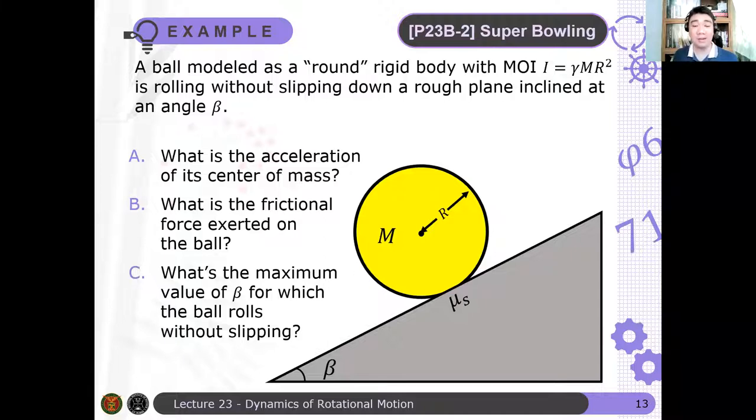First, what is the acceleration of the center of mass? Second, what is the frictional force exerted on the ball? And third, what is the maximum value of beta for which the ball rolls without slipping?